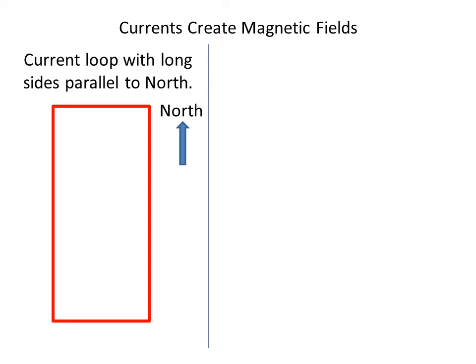First we lay out the wire and we lay the long side parallel to the direction of Earth's north. There's no current flowing through this wire yet. And then we put two compasses on the two long sides of the wire so that the red needle of the compass points north parallel to the wire.